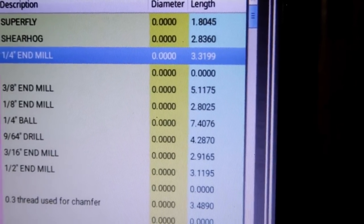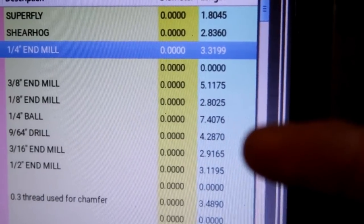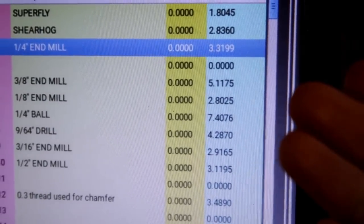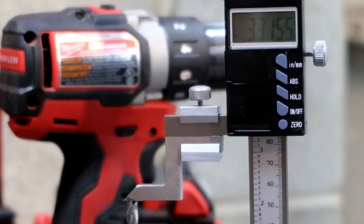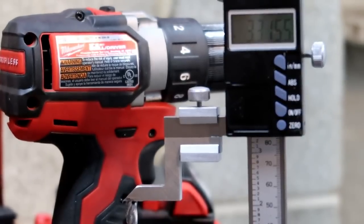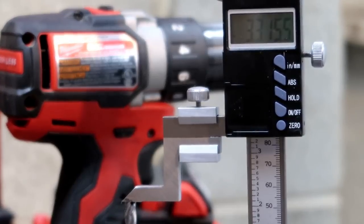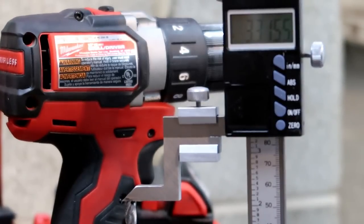But still, the tool height setter on the surface plate said 3.315, so we're four thousandths over that. I'm going to double check it on this thing over here. It's still 3.3155. Maybe it's more accurate when it's in the machine. That's what I'm going for here.